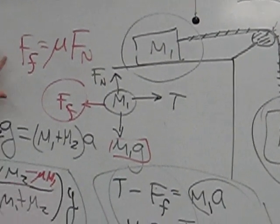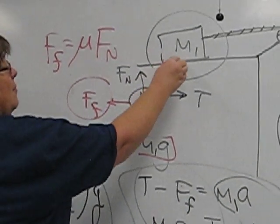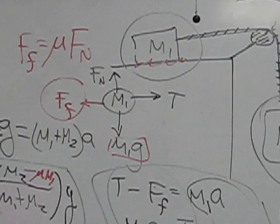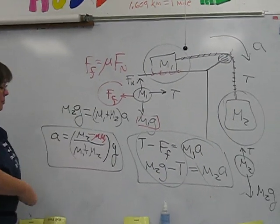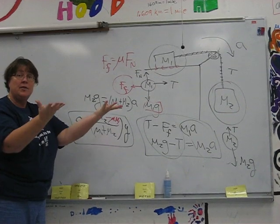For number 2, you've got friction going on between M1 and the table. So for problem number 1, I set up a problem for you without any friction at all. So there you go.